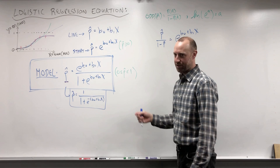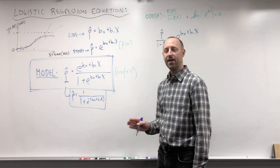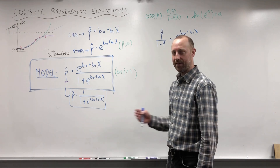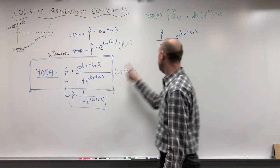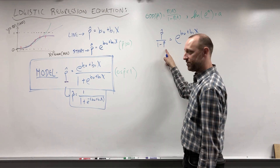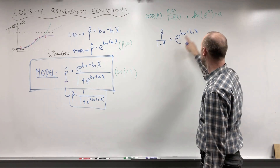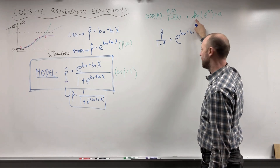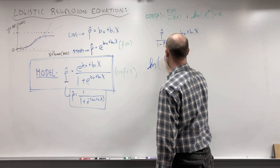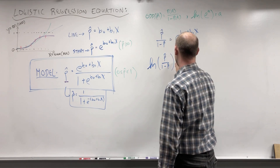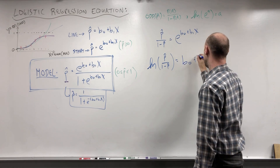That's some of the mathematics I've skipped; our focus is on applications rather than derivations. So P over 1 minus P is the odds of having the disease — probability of disease divided by probability of not having the disease. Now I want to get rid of the exponent by taking the natural logarithm of both sides. On the left, that gives us the log of P over 1 minus P. On the right, the log of e to the B-naught plus B1·X simply gives us B-naught plus B1·X.